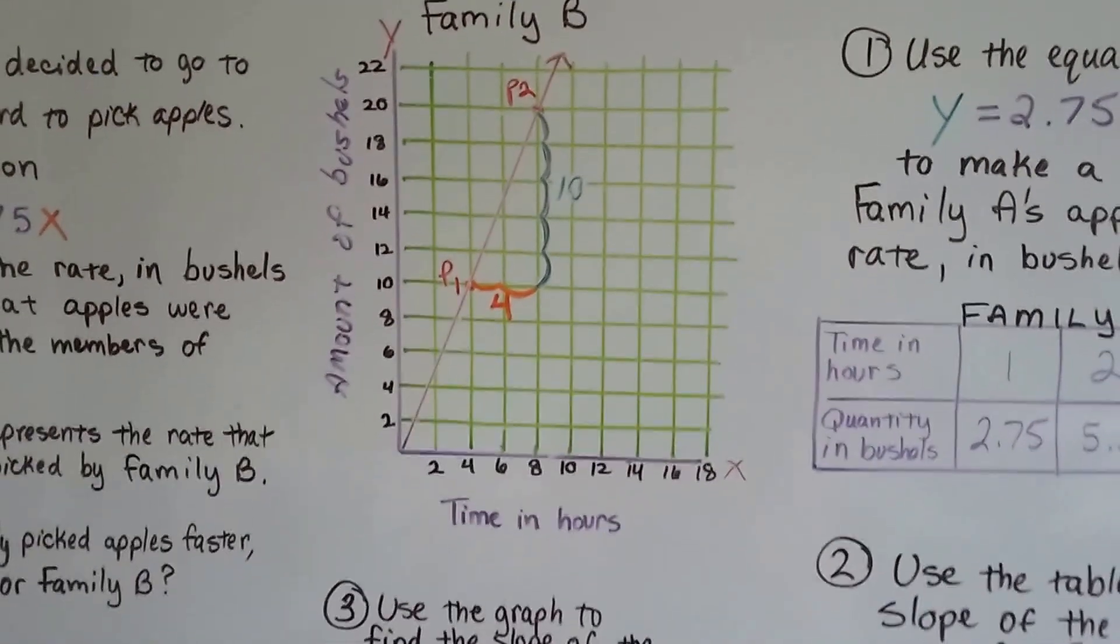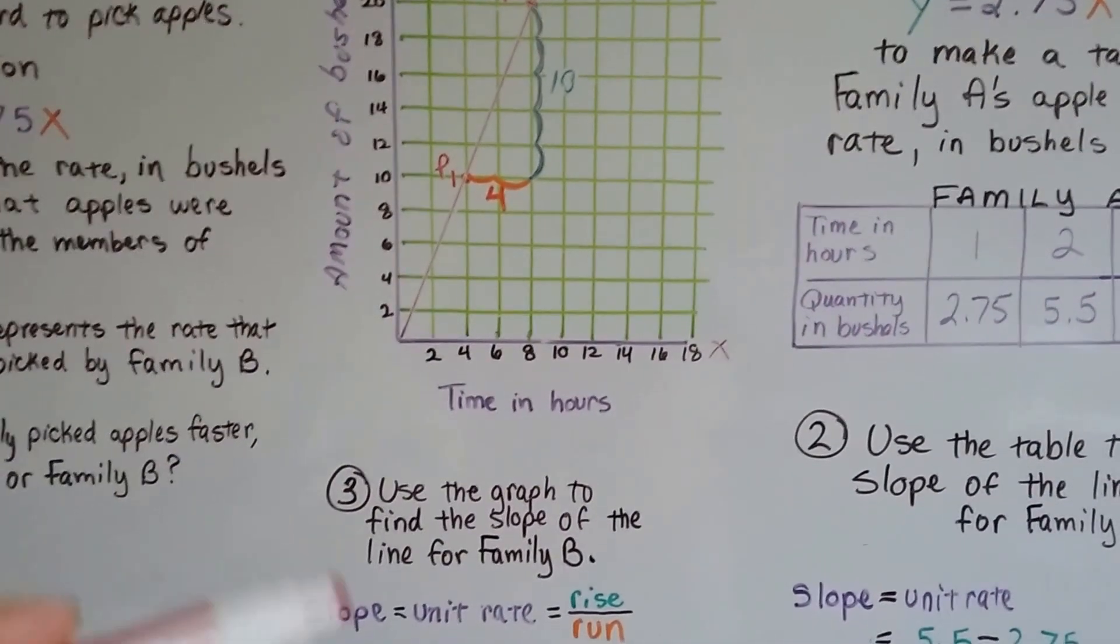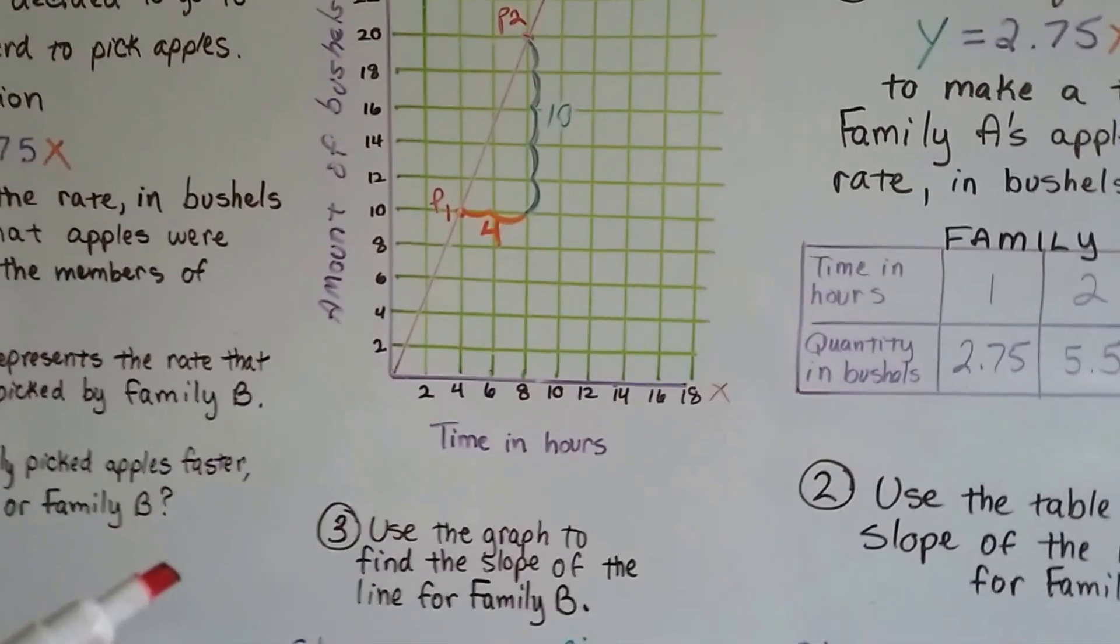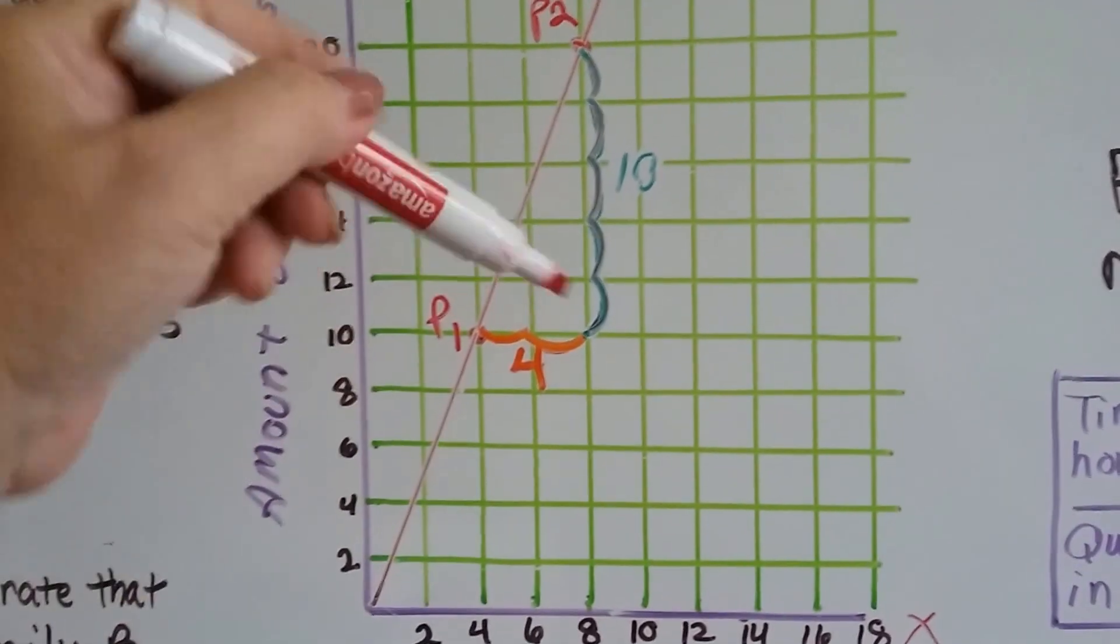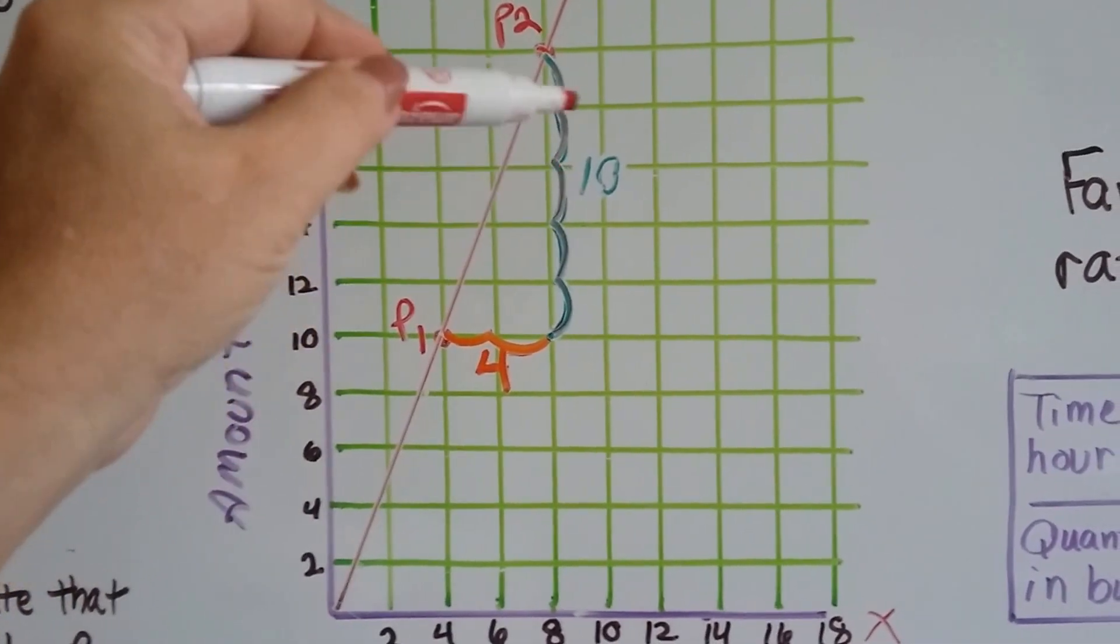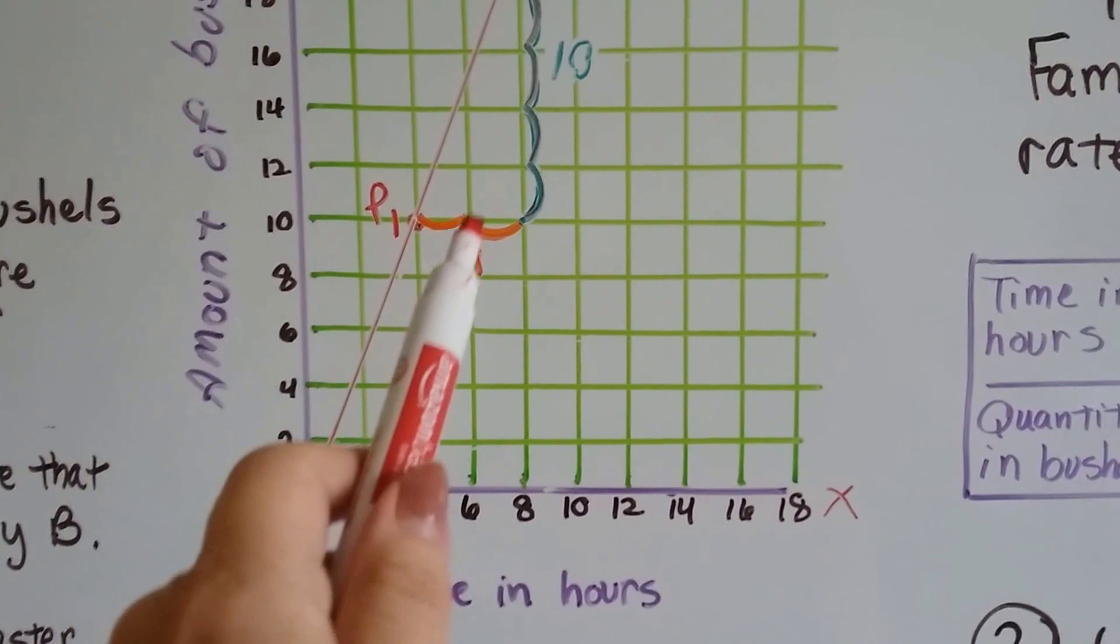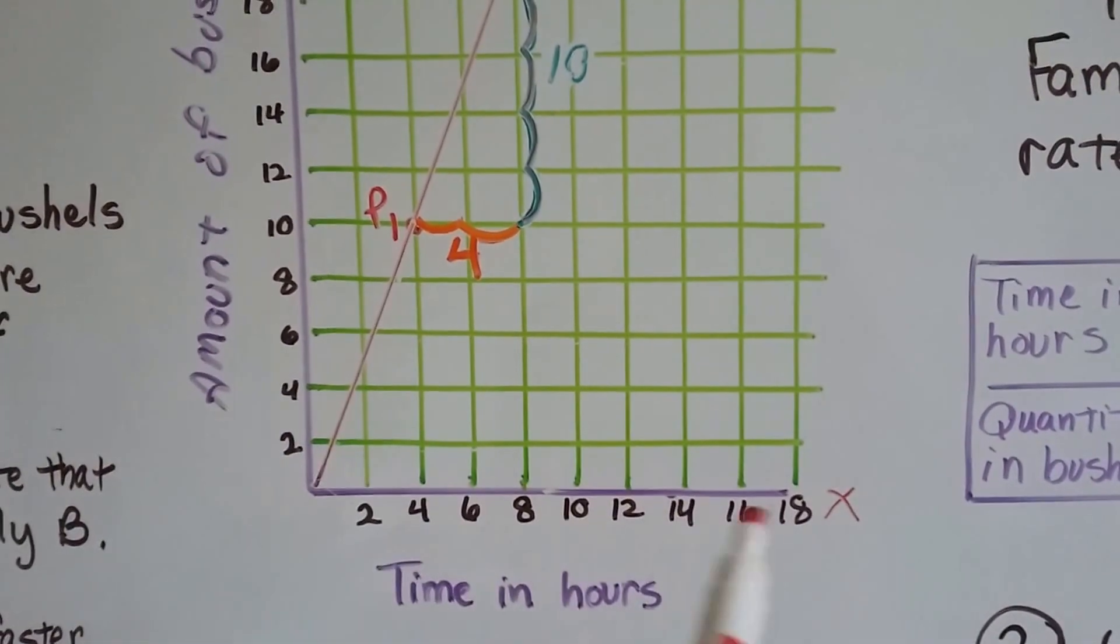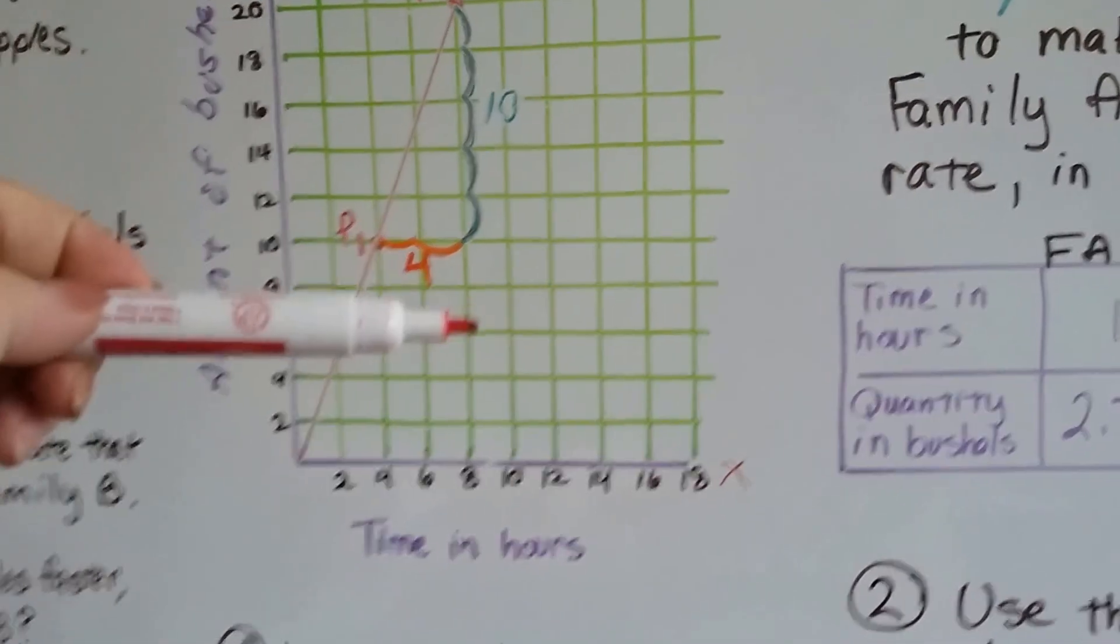Alright, so now we've got family B. We use the graph to find the slope of the line for family B. It's the rise over the run. We can count because each box represents 2. Our rise is 2, 4, 6, 8, 10. And our run, that's the horizontal, is 2, 4, because it counts by 2 also. So we've got our rise over run is 10 over 4.